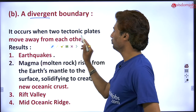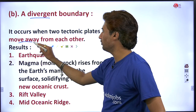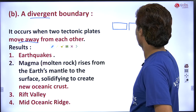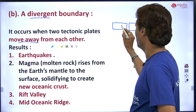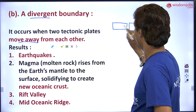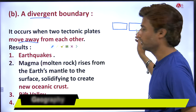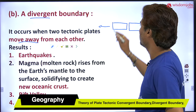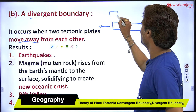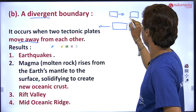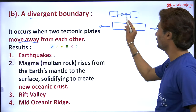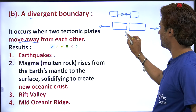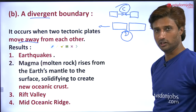It occurs when two tectonic plates move away from each other. One tectonic plate and a second tectonic plate — it may again be oceanic-oceanic, continental-continental, or oceanic-continental — moving away. Divergent means moving away and convergent means moving towards each other. Convergent is moving towards each other — that is the convergent boundary. While this is the divergent boundary.